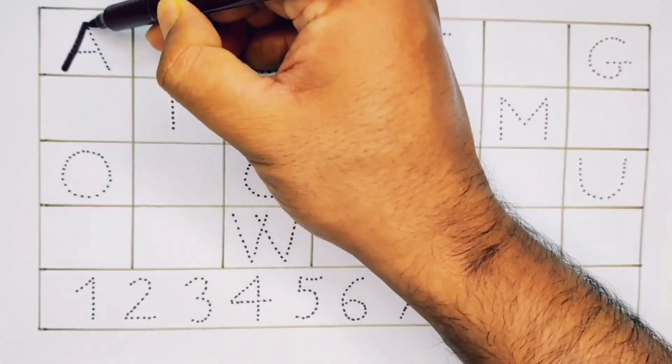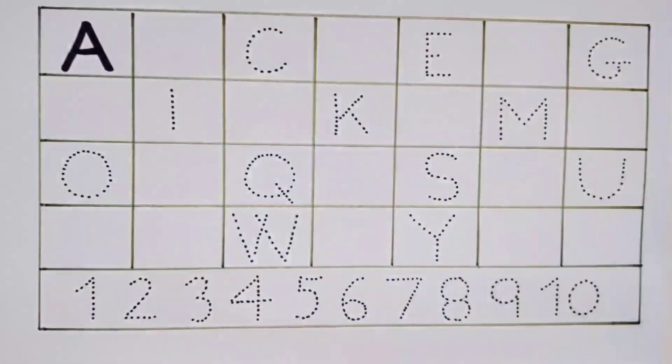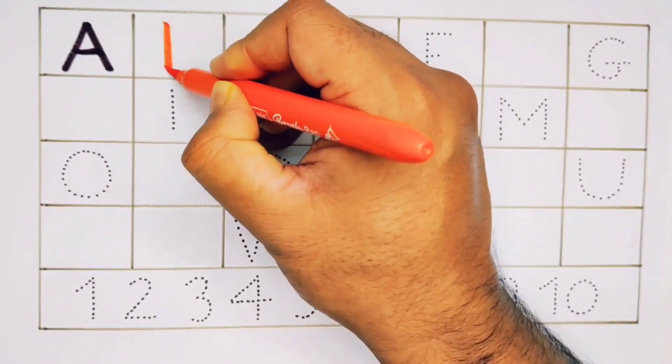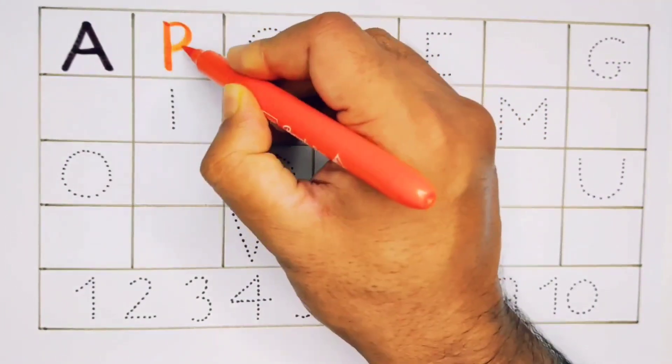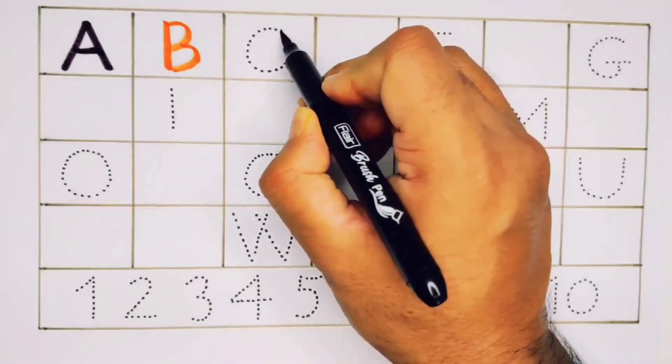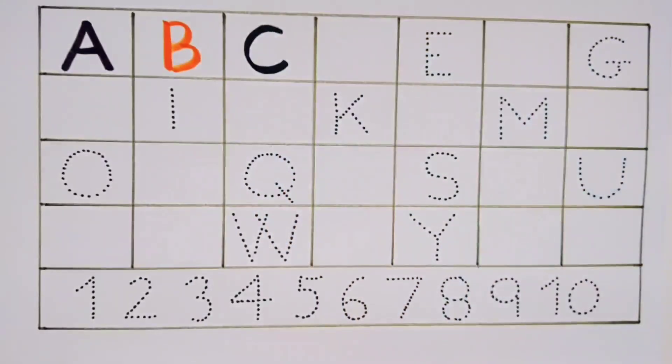A, A for Ant, A for Ant. B, B for Bag, B for Bag. C, C for Car, C for Car.